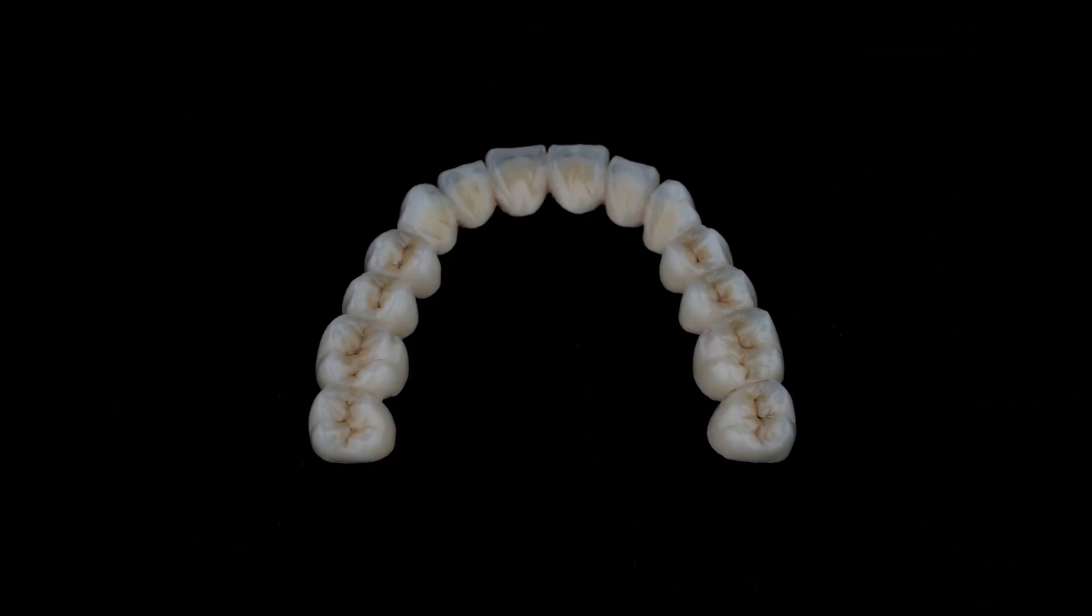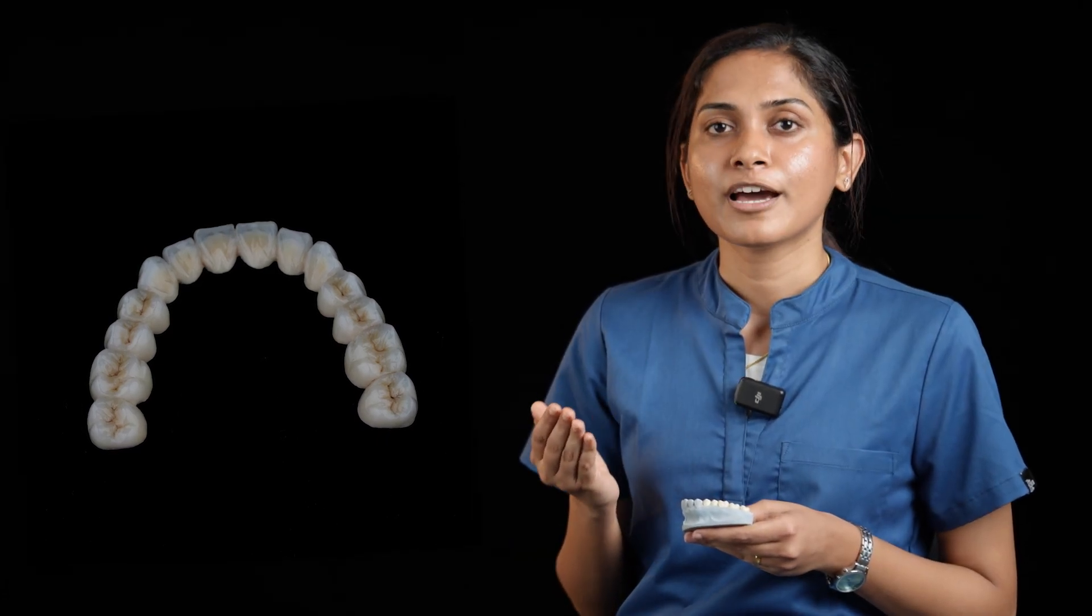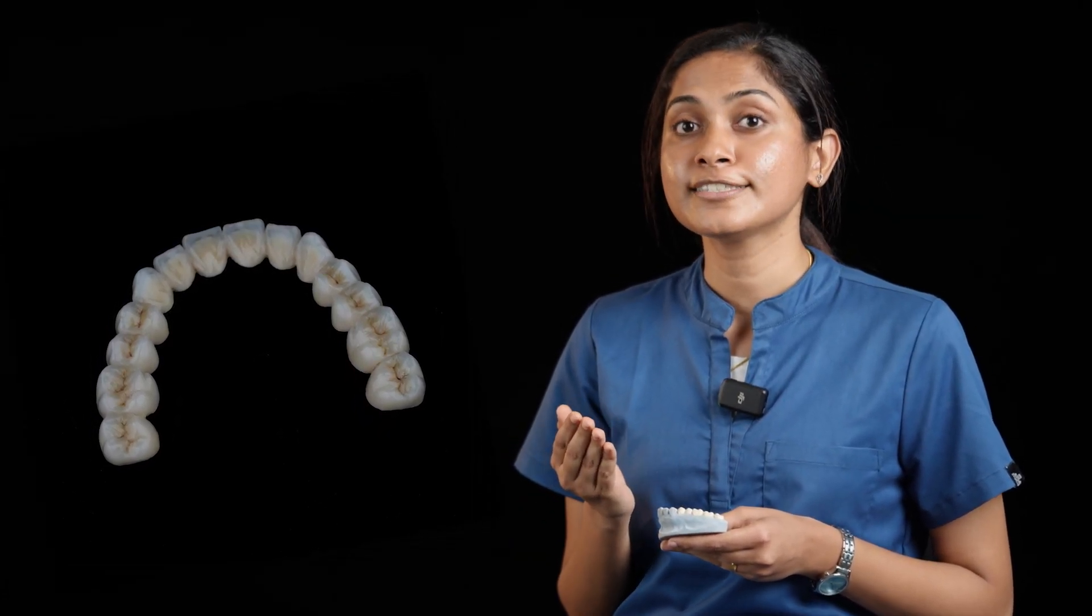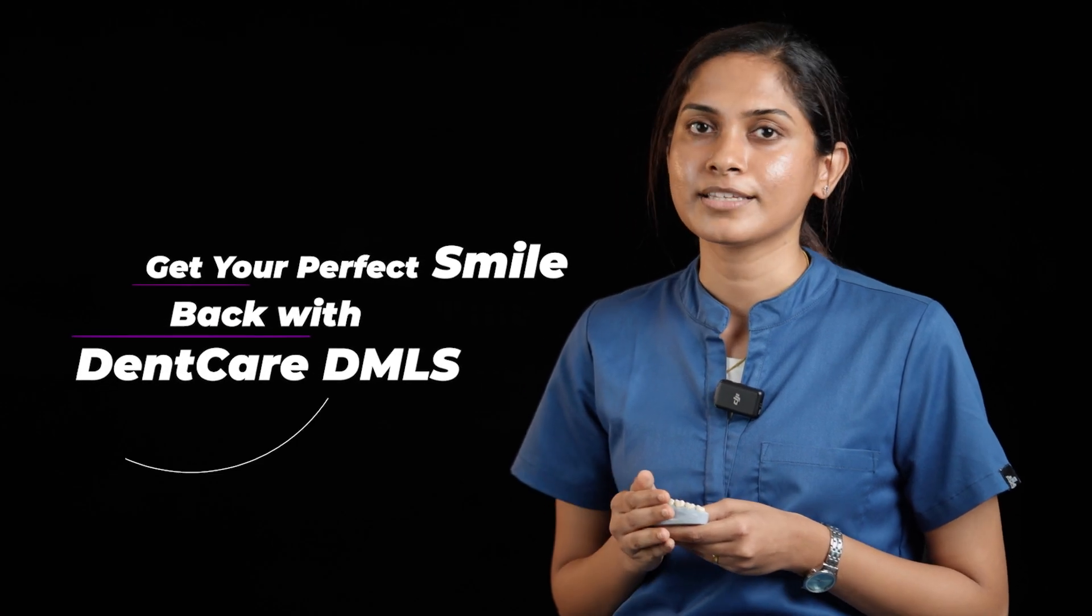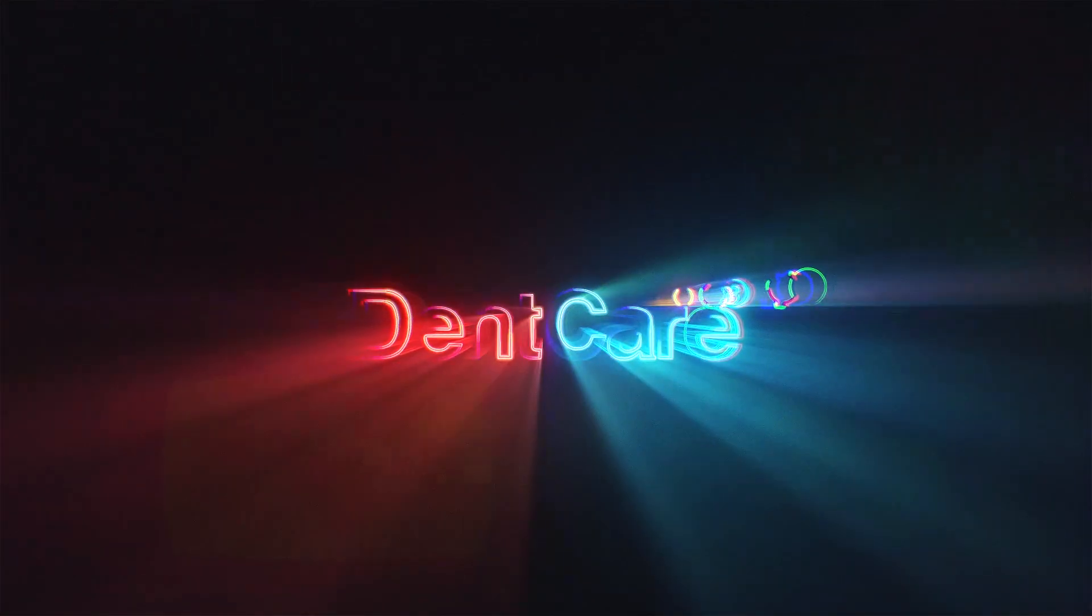Denkare DMLS can be layered with ceramics and light cured composites. It can be done complete or partial coverage, allowing your choice of aesthetic customization. Get your perfect smile back with Denkare DMLS.